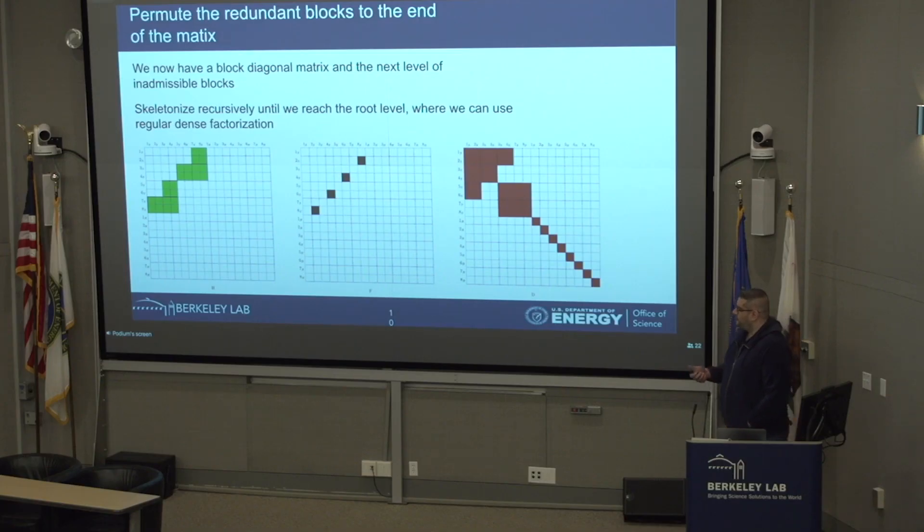We keep on doing that until we reach the root of the tree, where we can just use regular dense factorization on something that should be quite small.